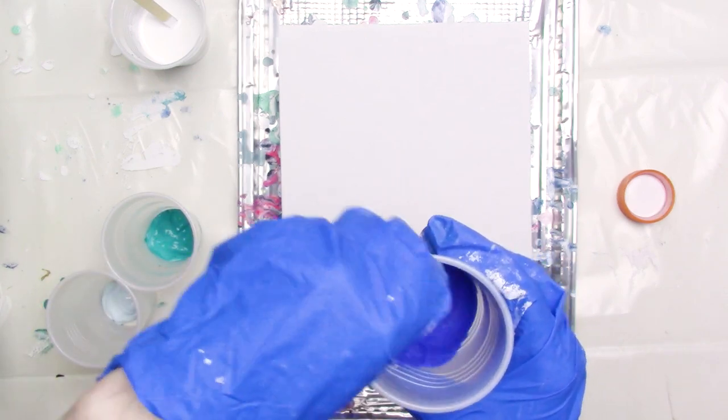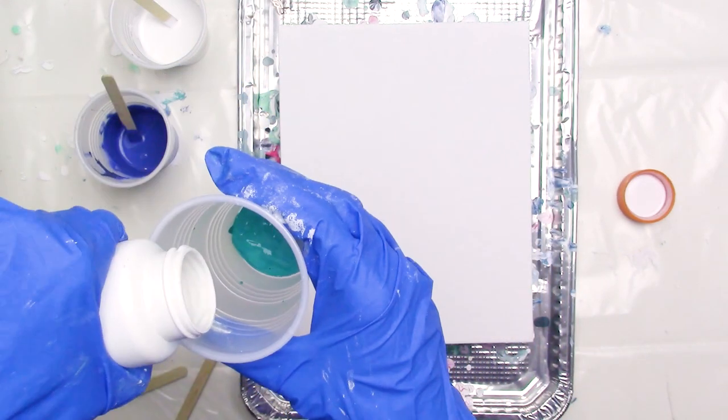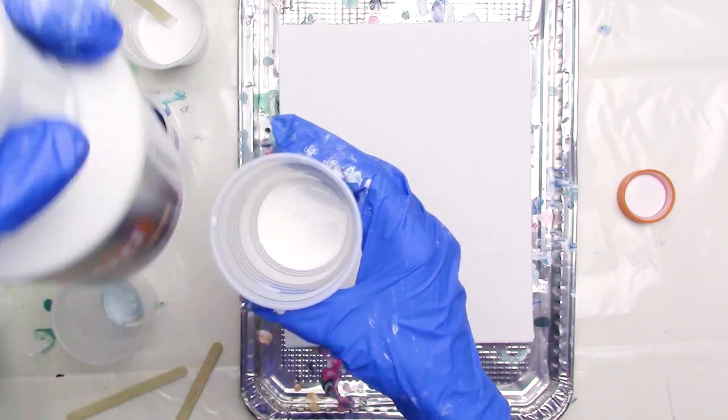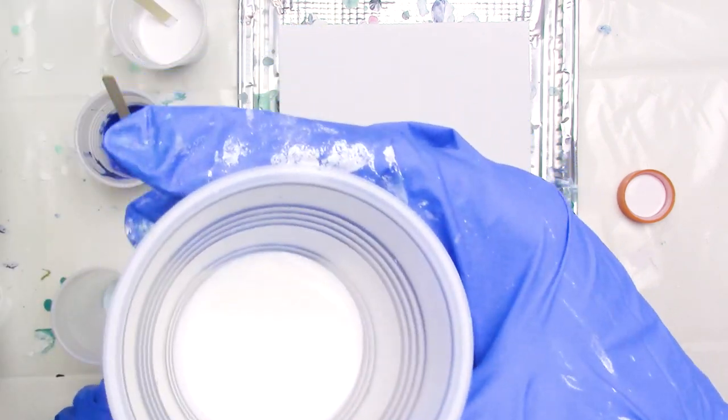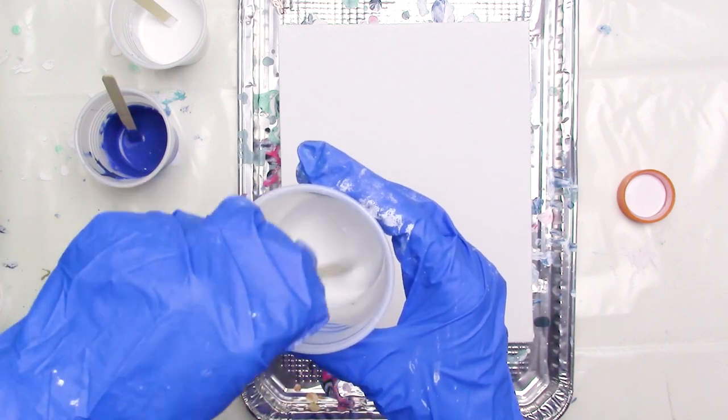It's a latex-based paint additive that helps latex and acrylic to flow and level better. I'm using the Floetrol at about a 1 to 1 ratio with the acrylic craft paint, which I'll be pouring on an 8 to 10 inch canvas panel.